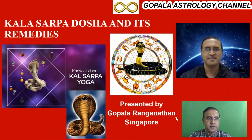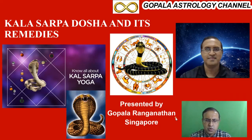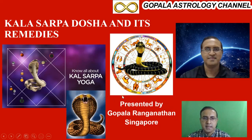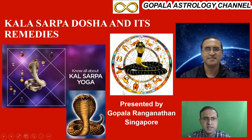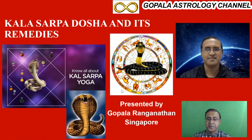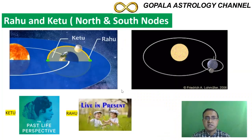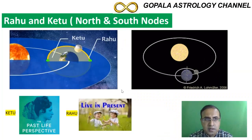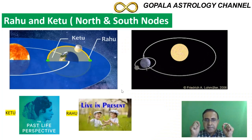The topic is Kala Sarpa Dosha and its remedies. Many people are scared about Kala Sarpa Dosha — they worry it's going to be a very blocking point in their career and life. Kala Sarpa Dosha is related to the snake: Rahu represents the snake head and Ketu represents the snake tail. Let's first understand what Rahu and Ketu are in a simpler way.